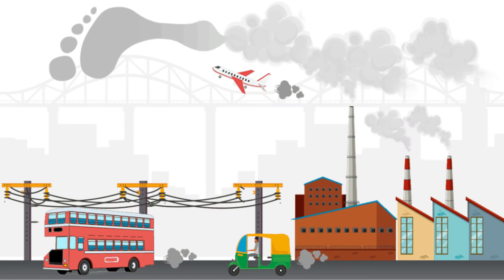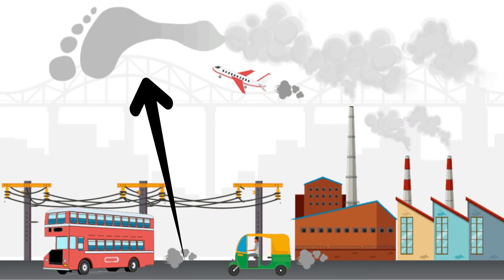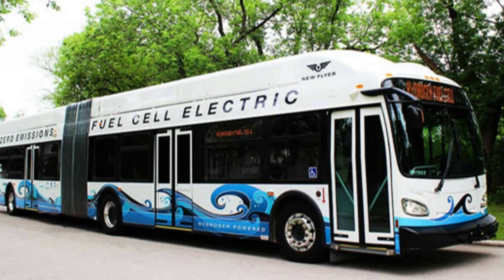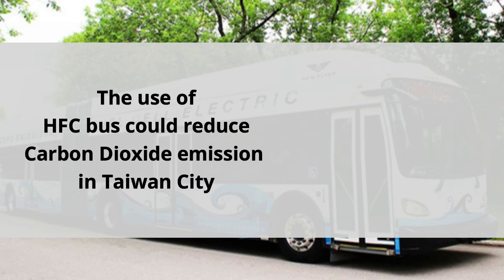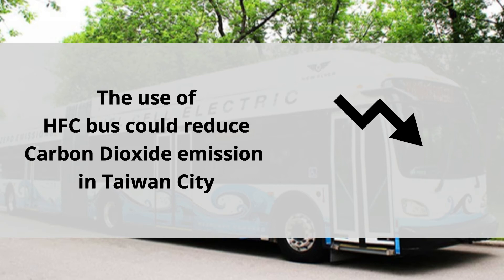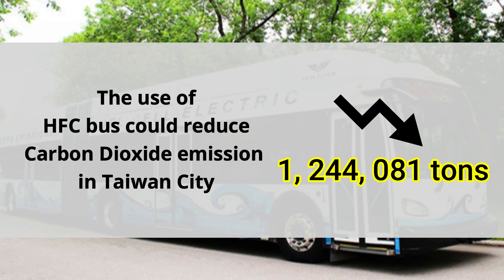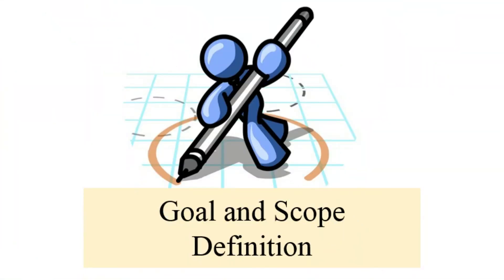Wait, before that — carbon footprint is the sum of greenhouse gas emissions and product removal in the system. Based on a case study conducted at Bus Road No. 2 in Taiwan City, Taiwan, the use of HFC buses could reduce carbon dioxide emissions by about 1,244,000 tons.